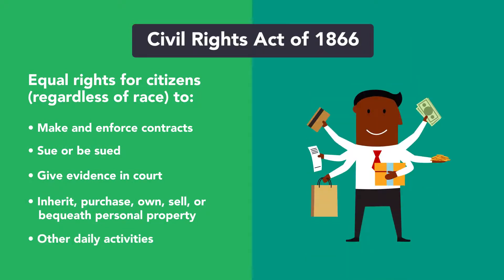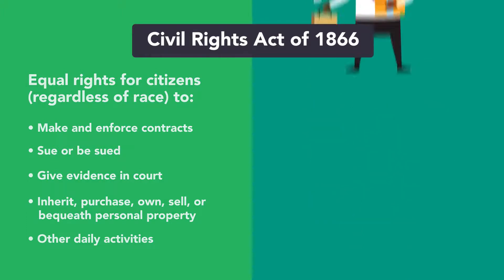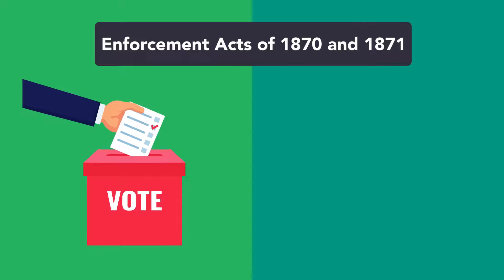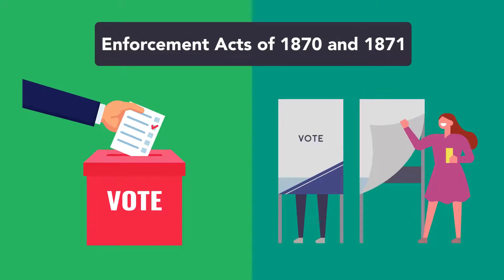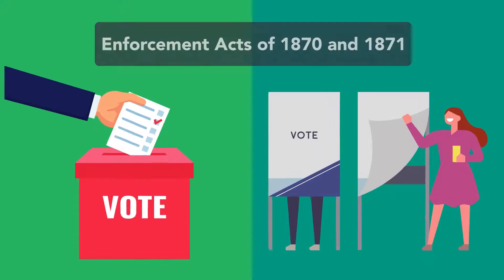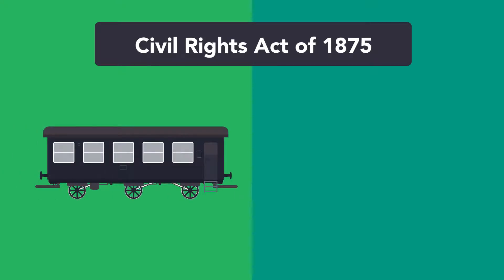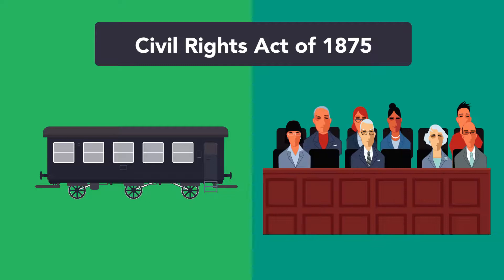These rights extended to daily activities that had previously been guaranteed only to Caucasians. The Enforcement Acts of 1870 and 1871 guaranteed the right to register to vote and protected new voters from intimidation and violence by placing the supervision of elections under federal control. The Civil Rights Act of 1875 prohibited discrimination in some public accommodations and on public conveyances, and also prohibited the exclusion of African Americans from service on juries.